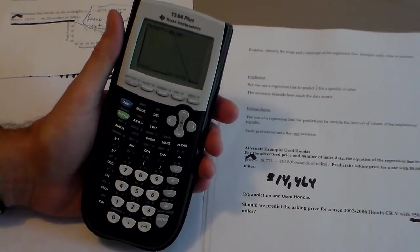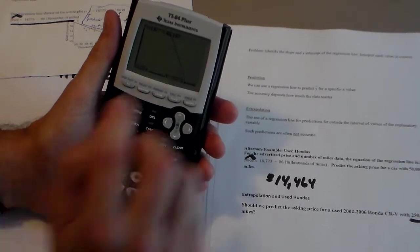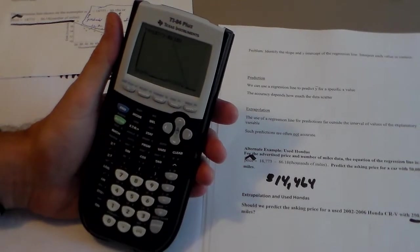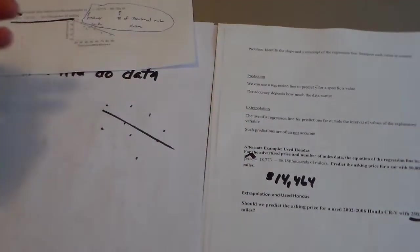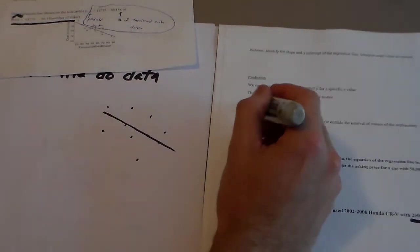Does it make sense that a car is worth negative $2,772? No. And that's the example of extrapolation.